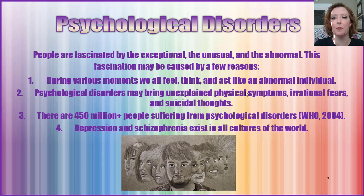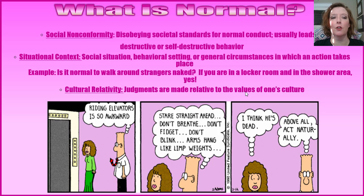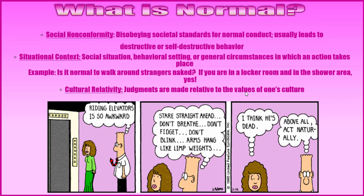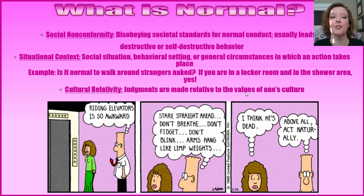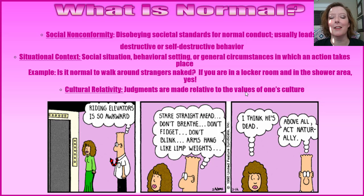So let's talk about what it even means to be normal. You've got a couple of qualifiers about what abnormal behavior might look like. The first one would be social nonconformity — disobeying societal standards for normal conduct, which usually leads to destructive or self-destructive behavior. Then there's situational context: the social situation, the behavioral setting, or general circumstances where an action is taking place. For example, is it normal to walk around strangers naked? Well, if you're in a locker room shower area, maybe — but it really depends on the context of where the behavior is taking place.